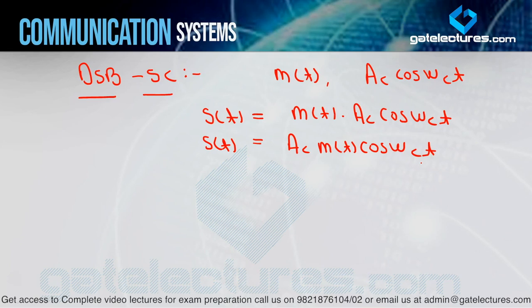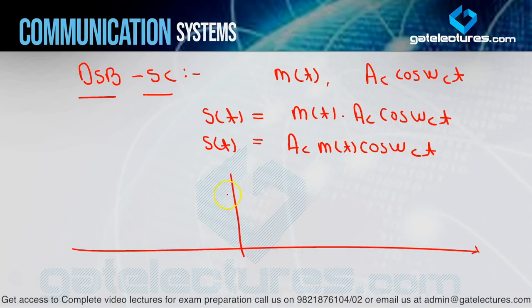Now let me draw the spectrum S(F). For S(F) we consider the Fourier transform of S(t). Here m(t) is multiplied with cosine, and we know the Fourier transform gives: [M(F − FC) + M(F + FC)] / 2. That means M(F) will be shifted once left by FC and once right by FC, and the overall amplitude will be divided by 2. Same thing we already studied in DSB-FC.